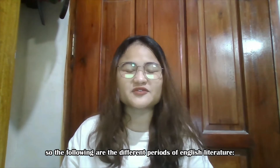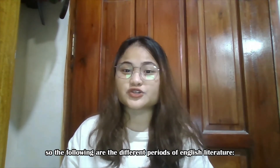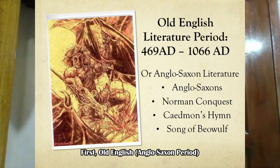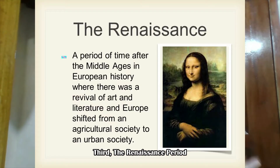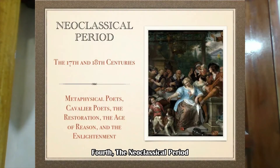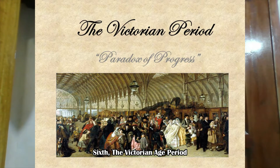The following are the different periods of English literature. First, the Old English Anglo-Saxon period. Second, the Middle English period. Third, the Renaissance period. Fourth, the Neoclassical period. Fifth, the Romantic period.